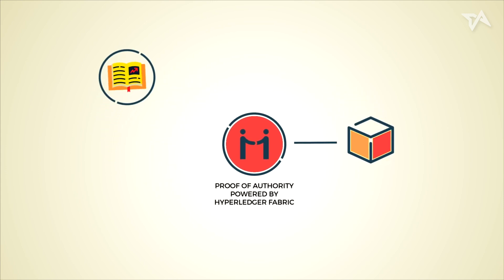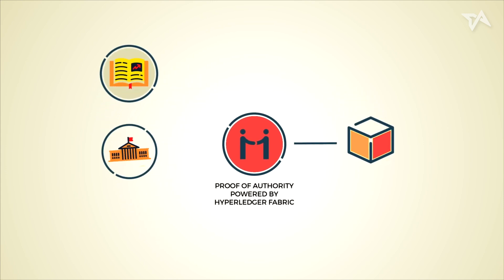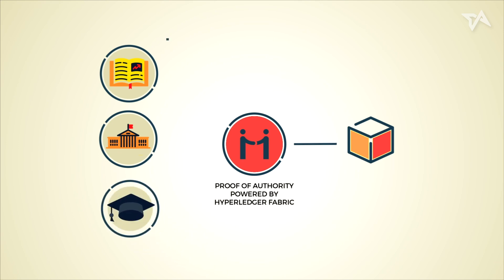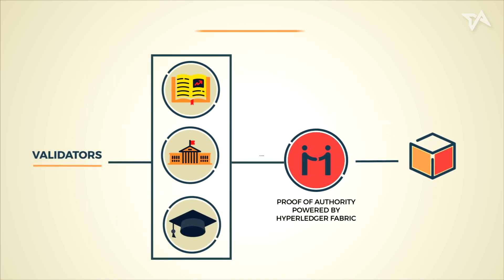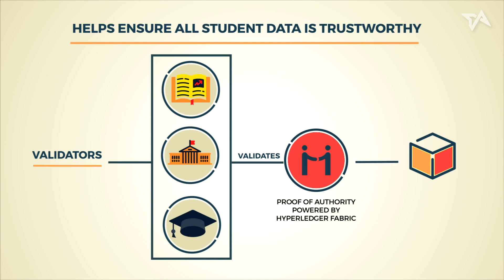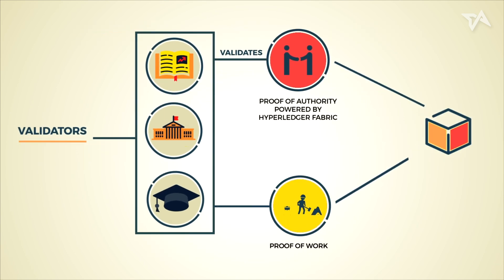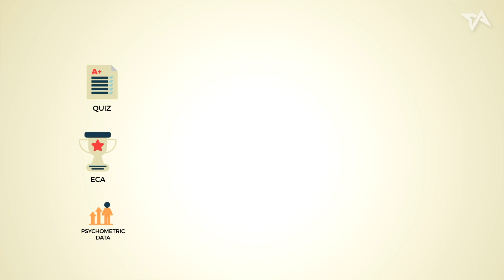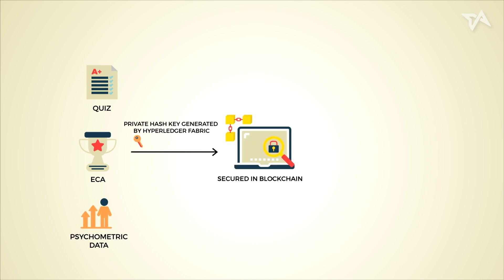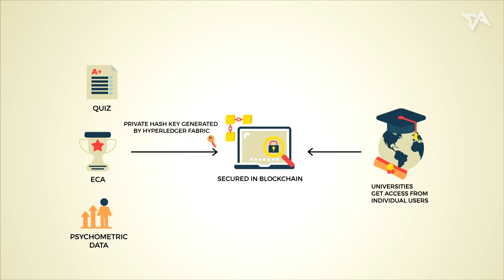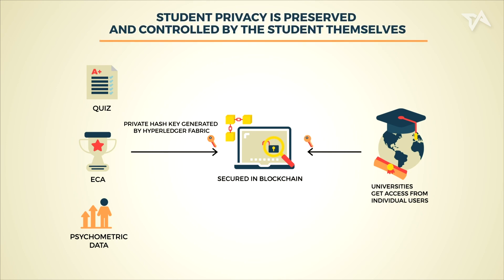Validators, in this instance, are reputable educational institutions or even national registrars and respective ministries of education. This helps ensure that all student data is trustworthy. But who will work for free? Proof-of-work consensus thus comes into play to reward validators who have performed work. With Hyperledger Fabric, each student record is secured with a private hash key owned by the student. The data can only be accessed when the students provide the unique key, meaning student privacy is preserved and controlled by the student themselves.